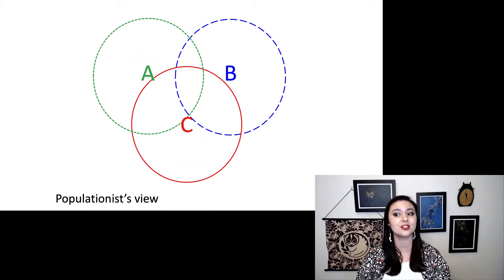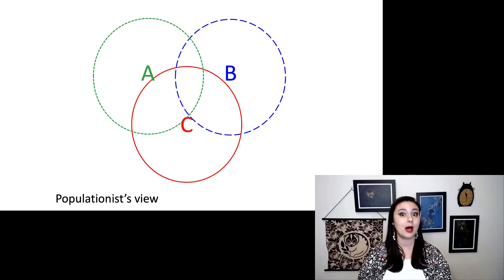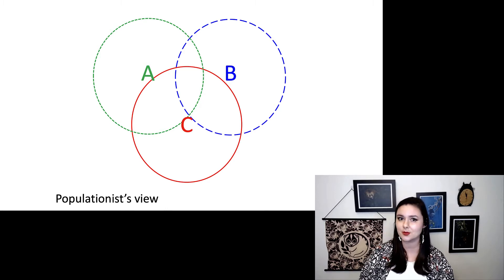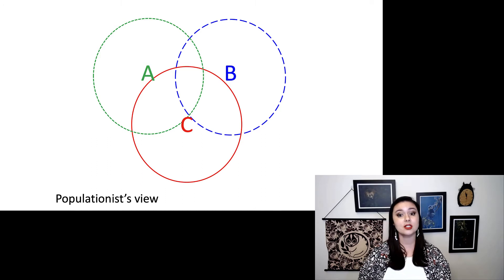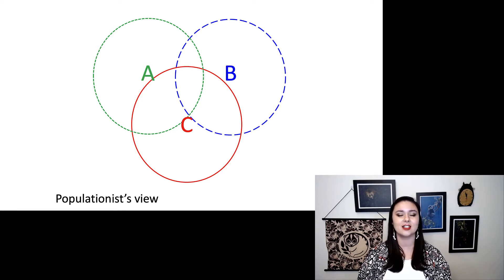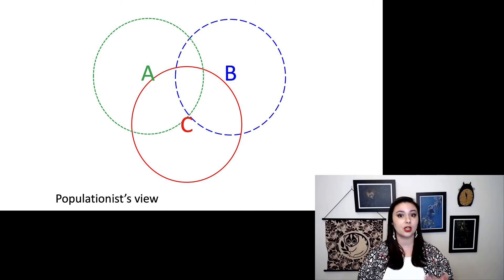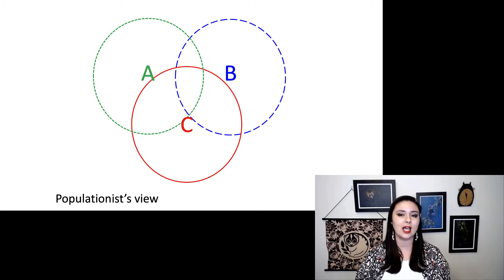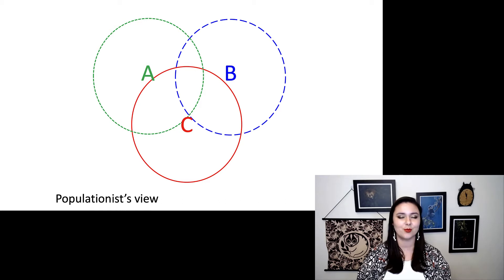Here is a populationist view. This is what a population geneticist would expect to see between different subspecies. Now we're seeing more overlap, but we're still seeing pretty distinct population clusters. We are visualizing this in genetic variation — you could think of it as which alleles are present in which population. So in the area that is only A, those would be alleles we only find present in population A.